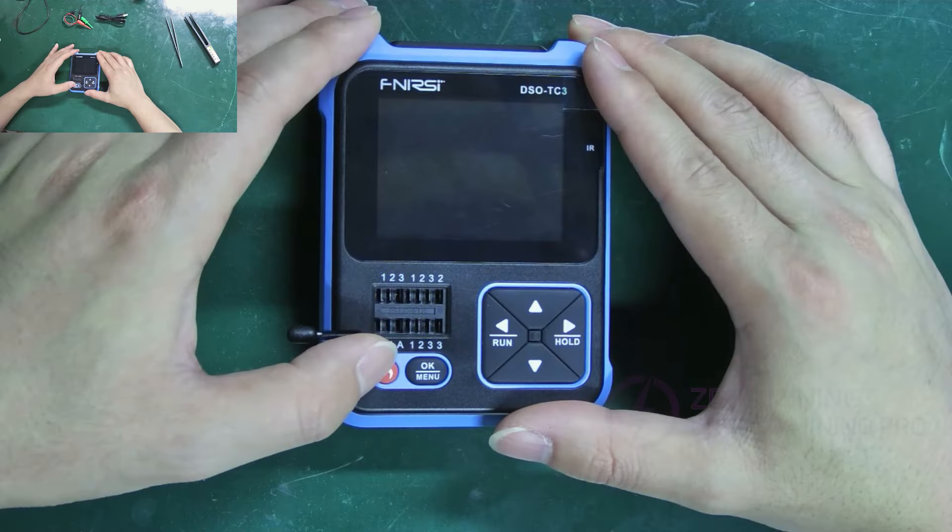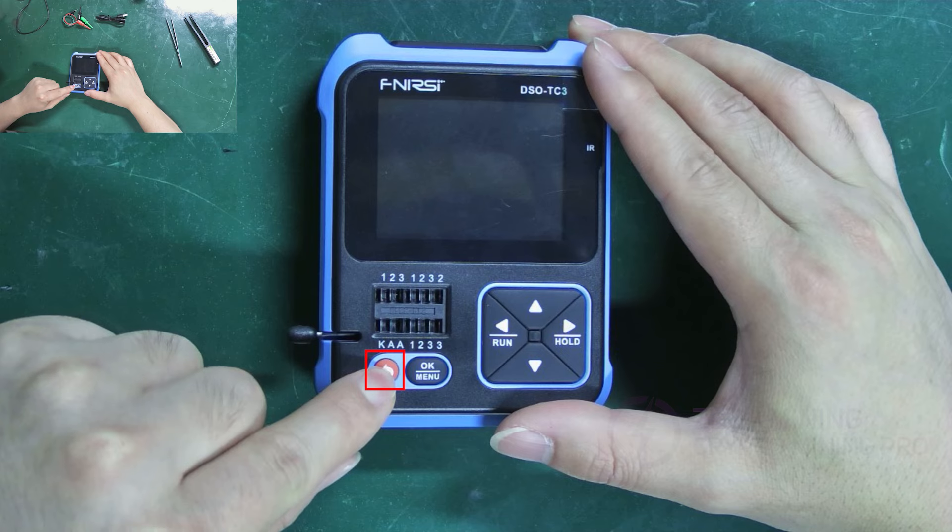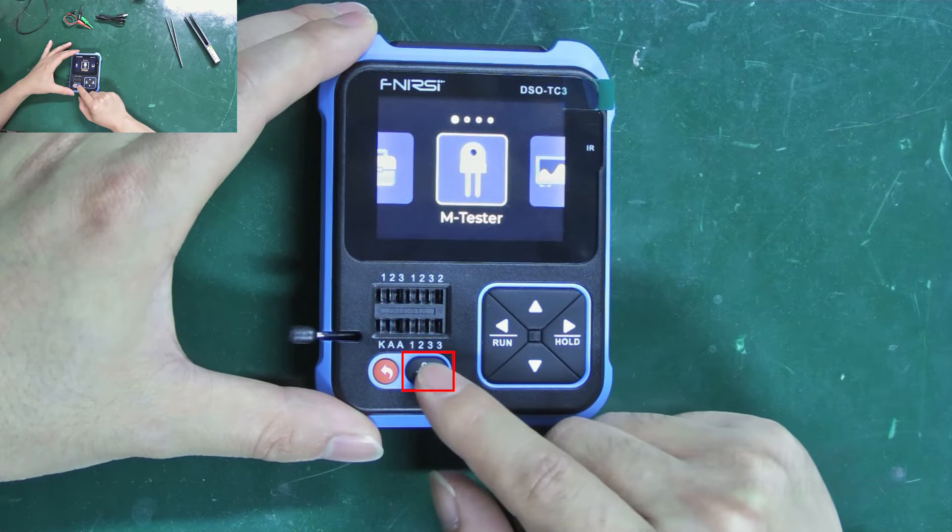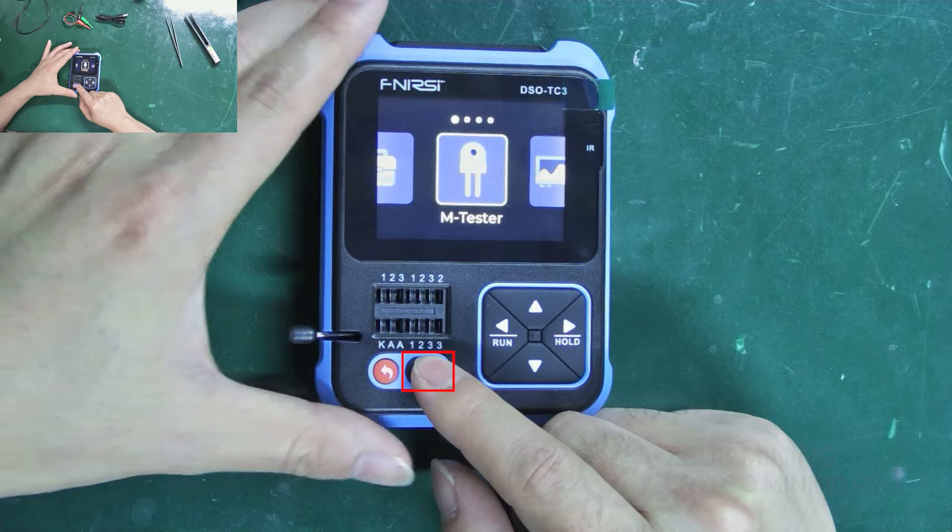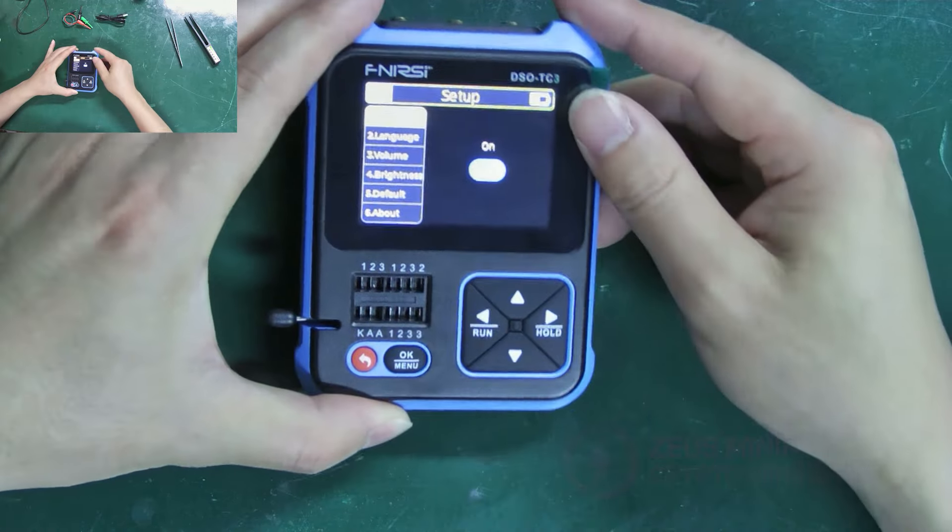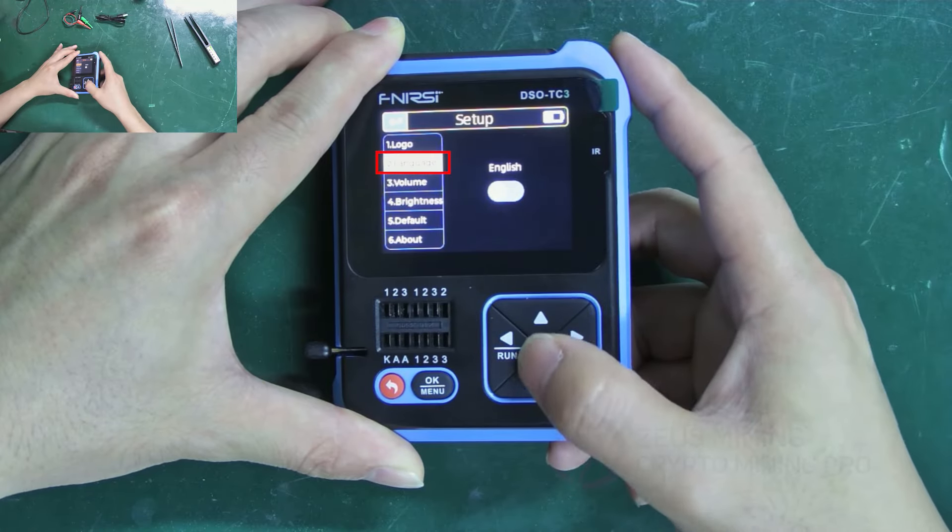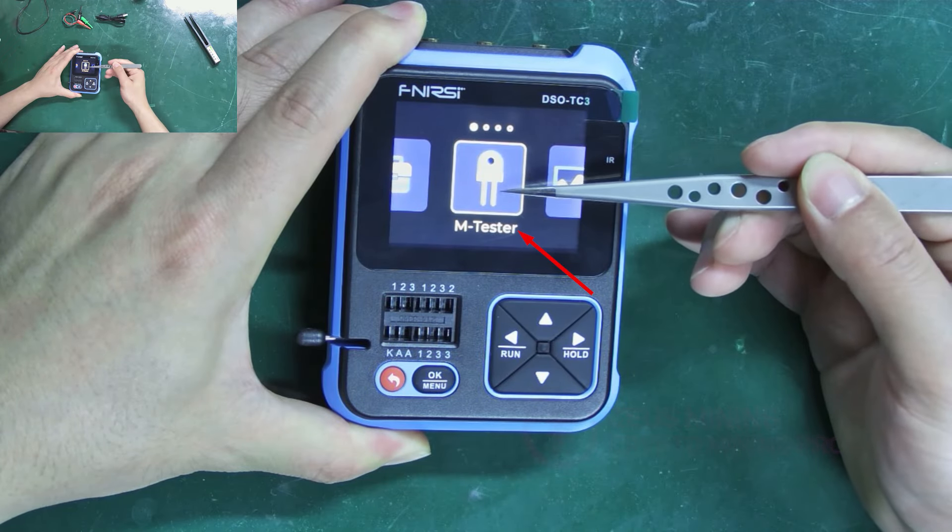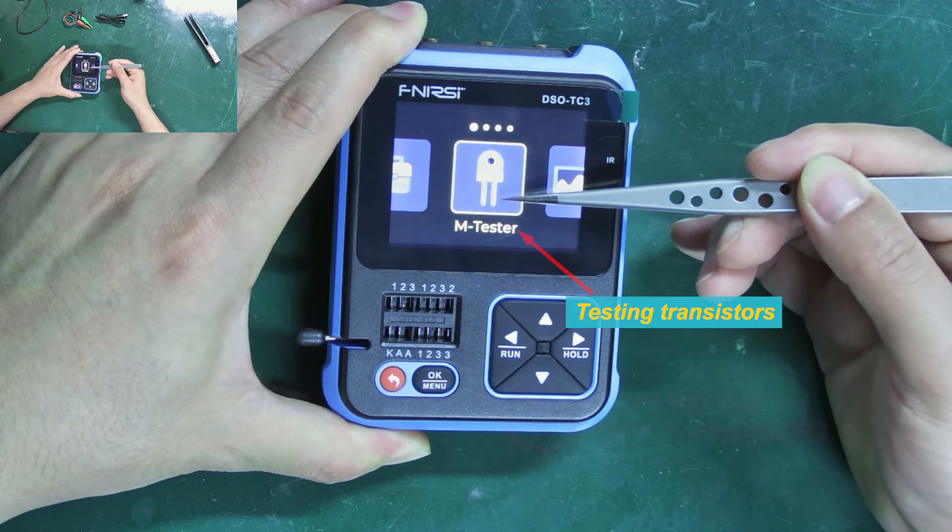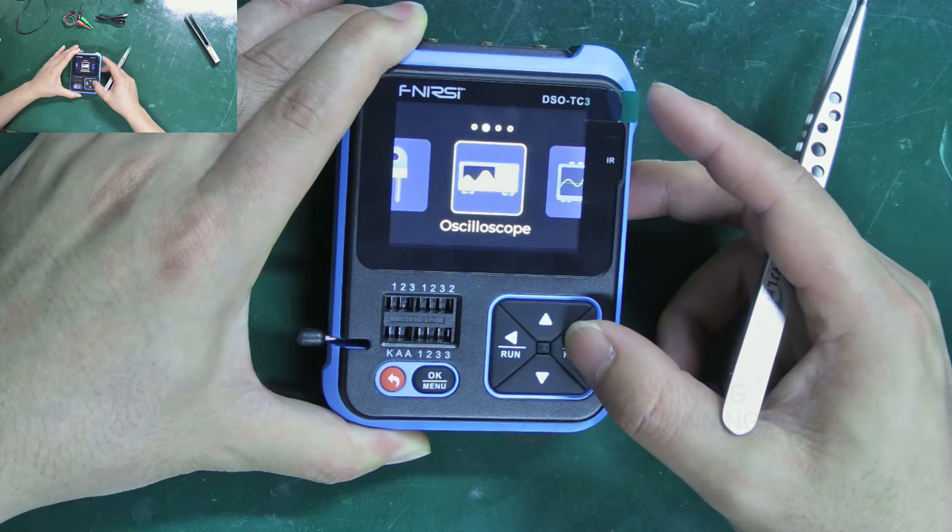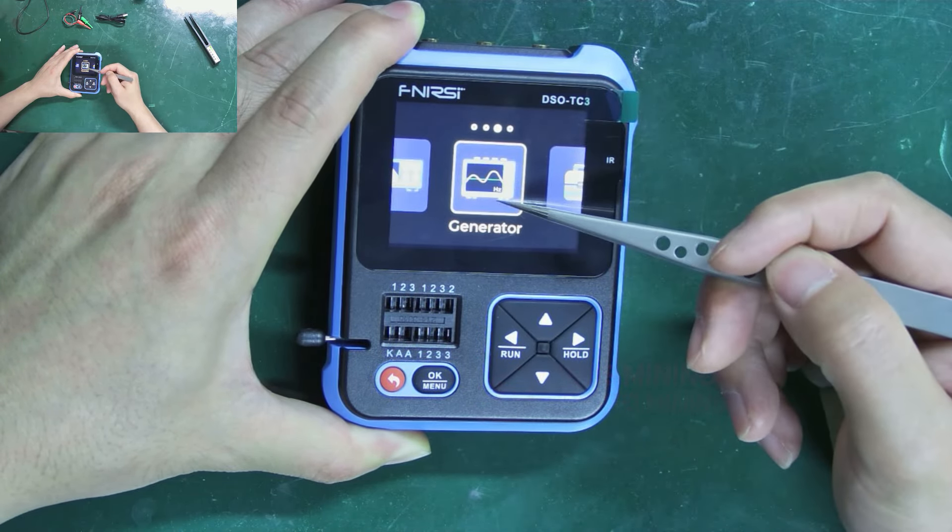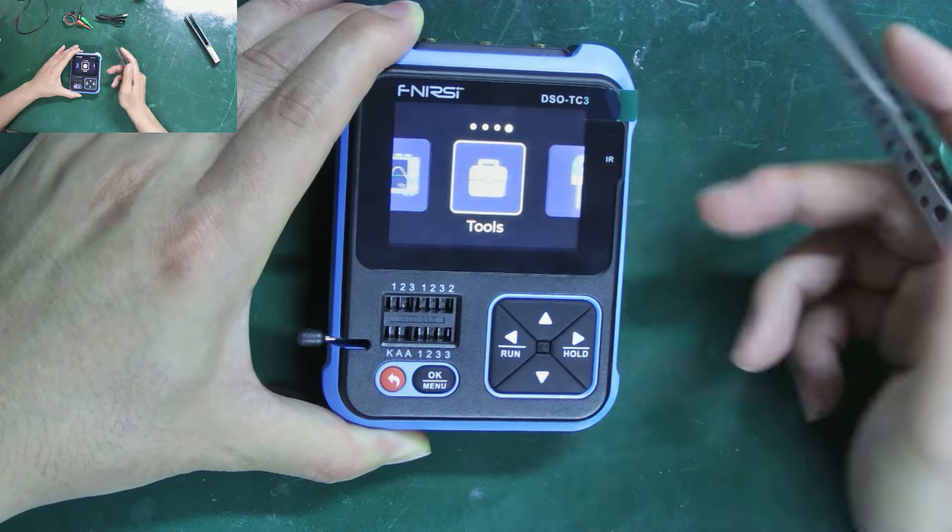Now let's press and hold the red button to turn it on. Then press and hold the menu button to enter language settings. We can see the second option is to switch languages. The M tester on the screen is used for testing transistors. Moving to the right, there are oscilloscope test, signal transmitter test, and tools.